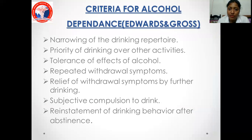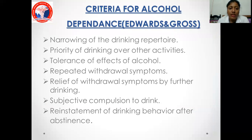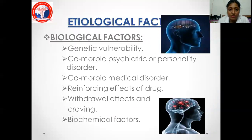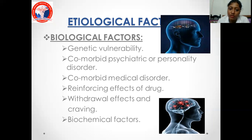Criteria for alcohol dependence by Edwards and Gross include: narrowing of the drinking repertoire, priority of drinking over other activities, tolerance of effects of alcohol, repeated withdrawal symptoms, relief of withdrawal symptoms by further drinking, subjective compulsion to drink, and reinstatement of drinking after abstinence. Etiological factors include biological factors such as genetic vulnerability, psychiatric or personality disorder, medical disorder, reinforcing effects of alcohol, withdrawal effects, and biochemical disorders.